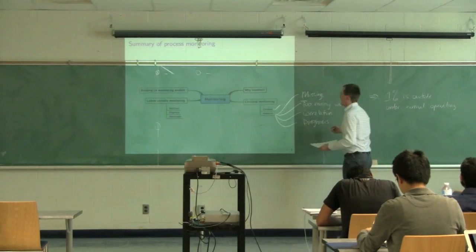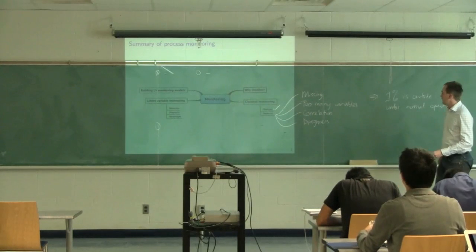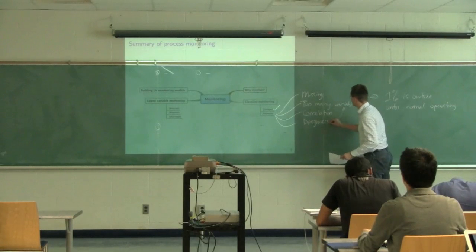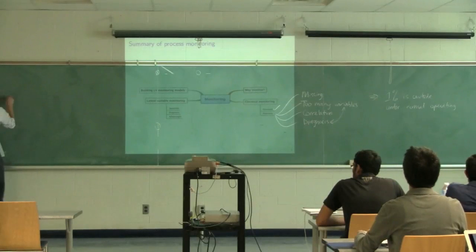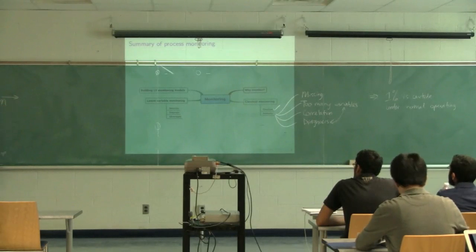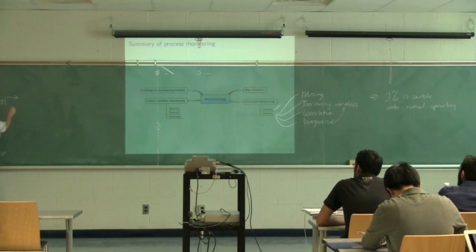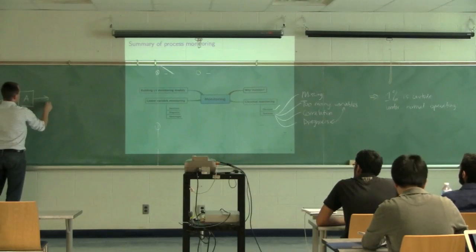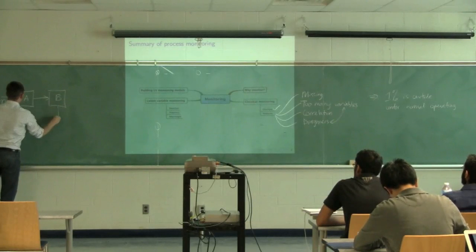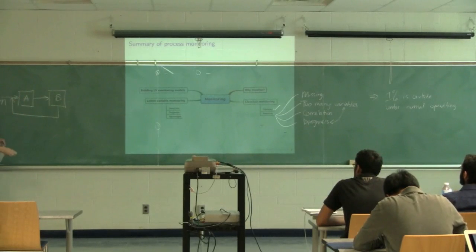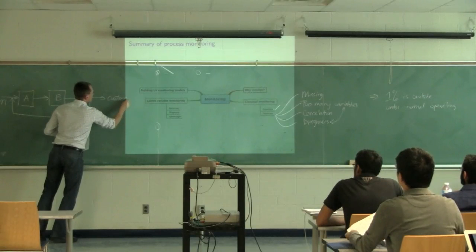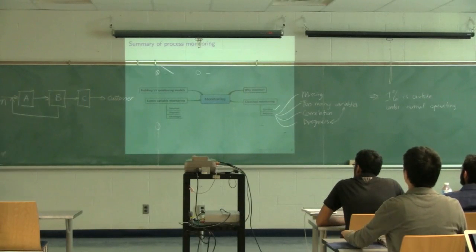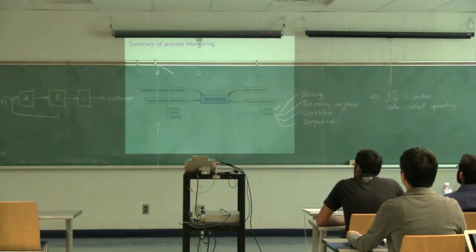Diagnosis is a big problem too. I'm going to tie that discussion of diagnosis with the concept of too many variables. I'll look at an extremely simple process: raw materials coming in, fed to unit A, which processes it, then unit B processes it some more, there's a recycle loop, and we finish up production and sell to our customers. Very simple process—this flowsheet is trivial, but it highlights the problem with univariate monitoring.